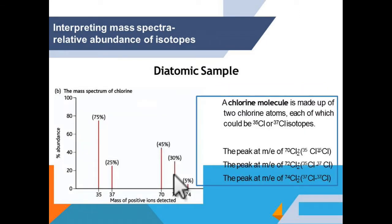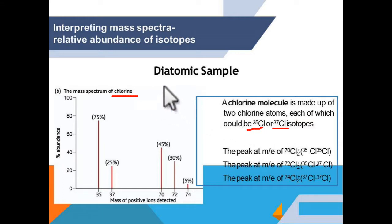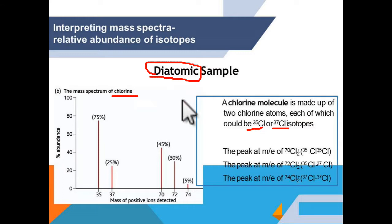Let's look at a diatomic sample. Please give extra attention to this diatomic sample. The diatomic sample I'm using here is chlorine. It is well known that chlorine comes with two isotopes: Cl-35 and Cl-37. Since chlorine is diatomic, it has two chlorine atoms.